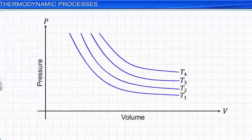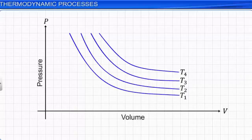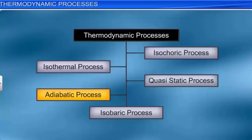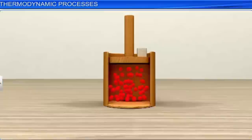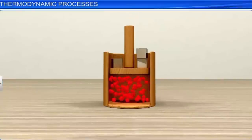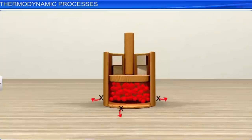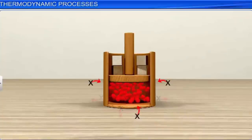In the graph shown, there are four isotherms representing the behavior of a given quantity of an ideal gas at four different temperatures. Another important thermodynamic process is the adiabatic process. If a system undergoes a process in which heat is neither extracted from it nor supplied to it, the process is called an adiabatic process, meaning ΔQ = 0.